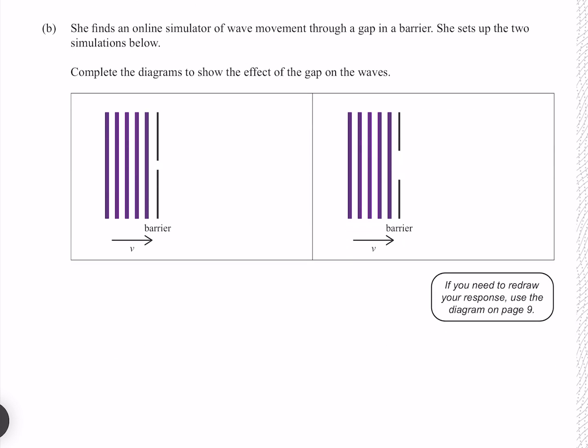She finds an online simulator of wave movement through a gap in a barrier. She sets up two simulations below, complete the diagrams to show the effect of the gap on the waves. Here we have a large wavelength compared with our barrier, and here we have a short wavelength compared with our barrier. The behavior we're going to see is diffraction. We're going to see more bending around for our comparatively large wavelength than we will for our comparatively small wavelength.